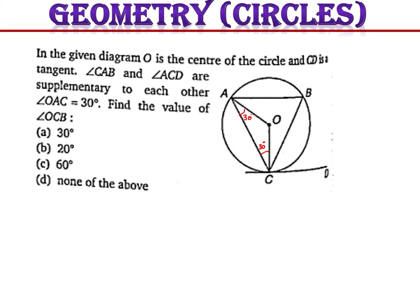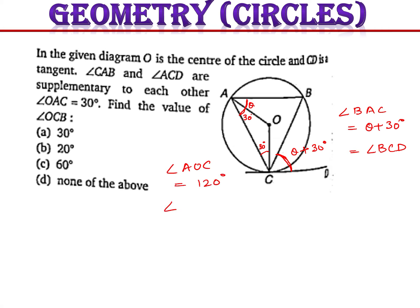Let's take angle BOA to be theta, so angle BAC will be equal to theta plus 30 degrees. Also, angle BAC equals angle BCD by the exterior angle theorem, so this angle is also theta plus 30 degrees. Angle AOC is 180 minus 60, which is 120 degrees, meaning angle ABC is 60 degrees — half the angle at the center.